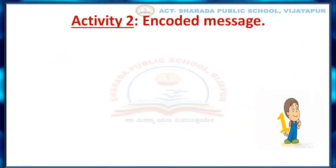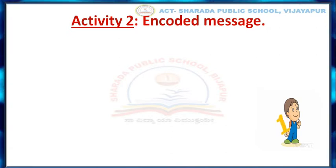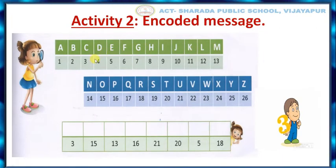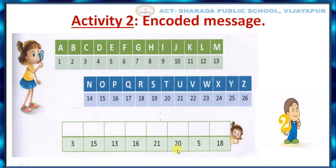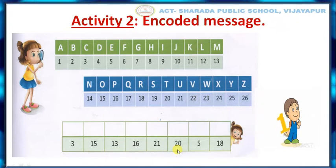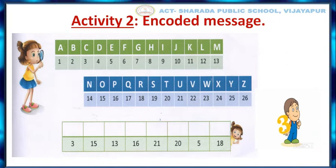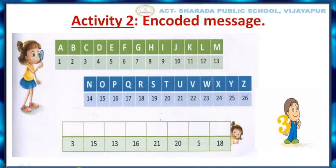Let us move to Activity Number 2, that is encoded message. Here I have given alphabets related to this, I have given numbers. In the last box, I have chosen some numbers. Children, you have to identify the letter which belongs to the numbers given here and write those letters in the given space.